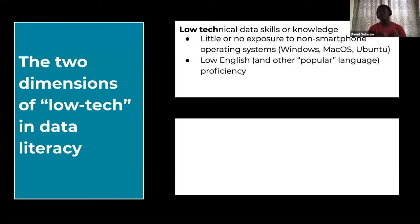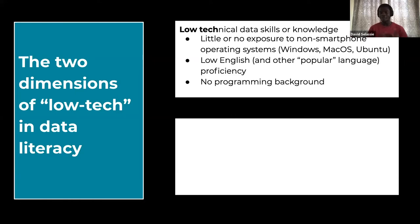Low English or other popular language proficiency is another dimension. Whether it's English, Spanish, French, or Portuguese — most European languages become a limiting barrier because content and resources aren't accessible to people. For somebody based in Kenya used to Swahili, or Ghana used to Twi, it becomes an additional barrier. Programming background is also relevant — a lot of the power of data comes from the ability to program, and that requirement has cultural and societal nuances that need to be overcome.